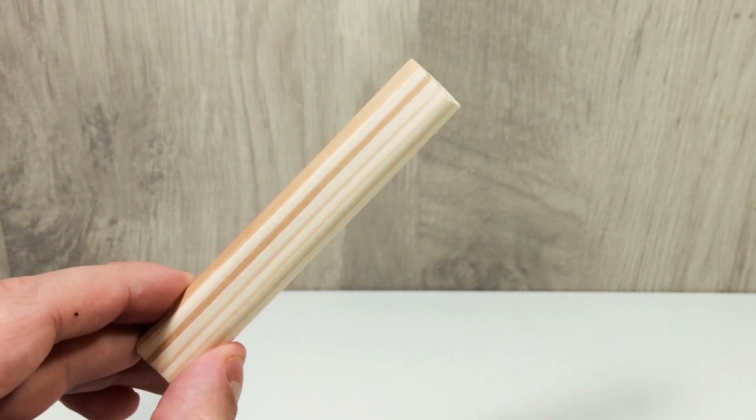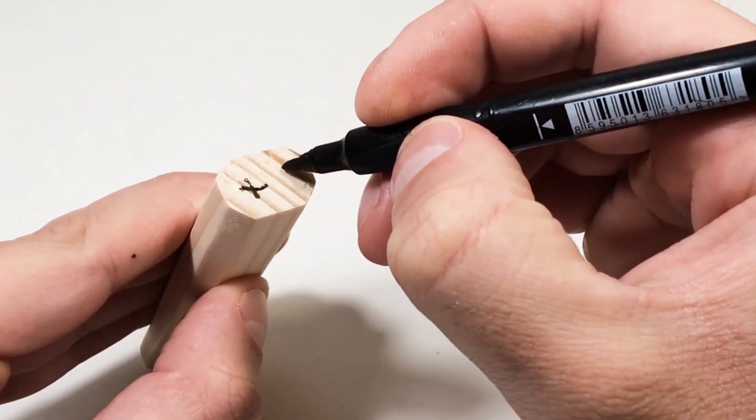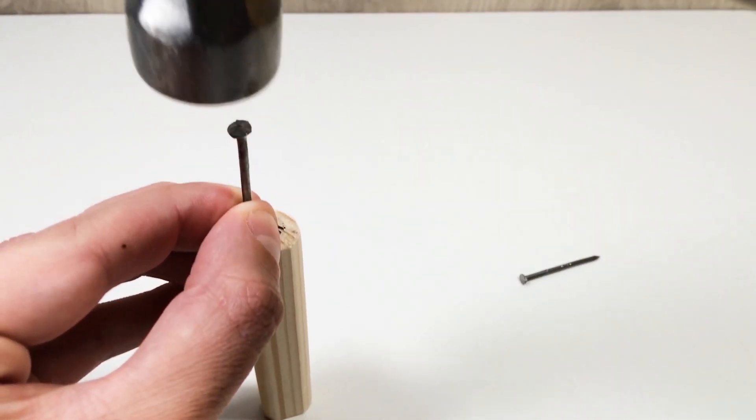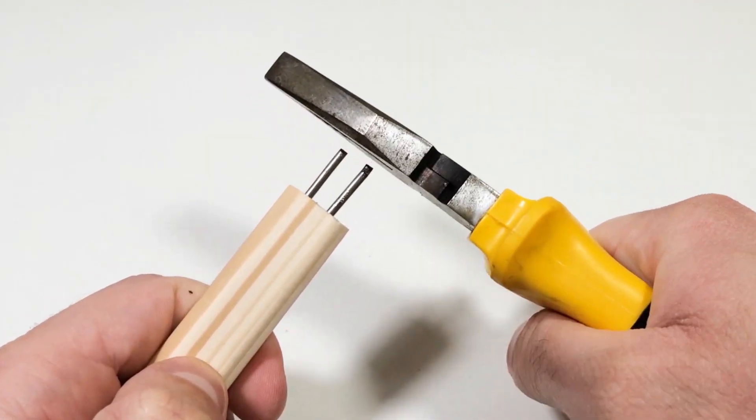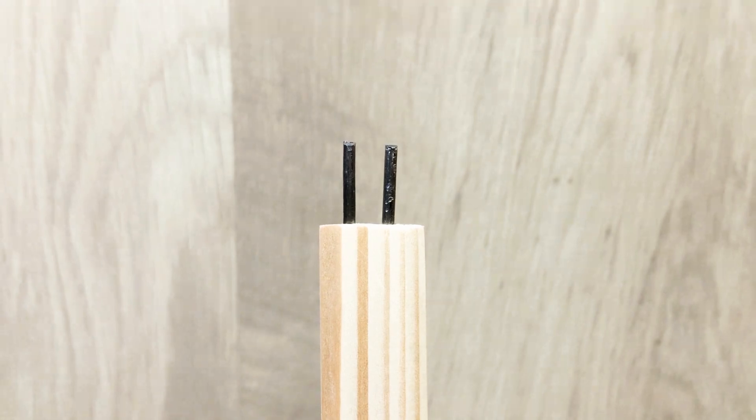We'll start with the handle. I'm using a wooden block that feels comfortable in the hand. On the end of the handle, I drive in two steel nails. I'm using steel because it has low thermal conductivity and cut off the heads. These will be our support contacts.